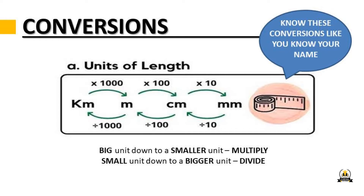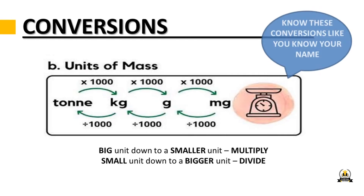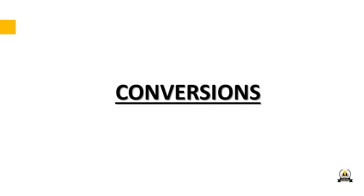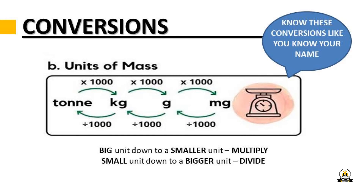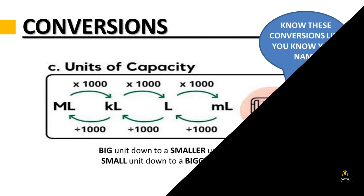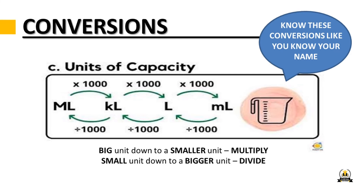For mass, we have milligrams, grams, kilograms, and tons. Moving from a big unit to a smaller one, you multiply by 1,000; moving from a smaller unit to a bigger one, you divide by 1,000. Unlike length — where you sometimes multiply by 10 or 100 — with mass it's always thousands: milligram to gram is 1,000; gram to kilogram is 1,000; kilogram to ton is 1,000.